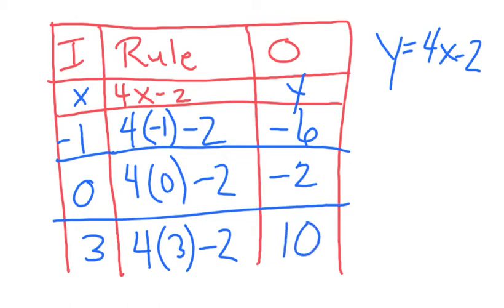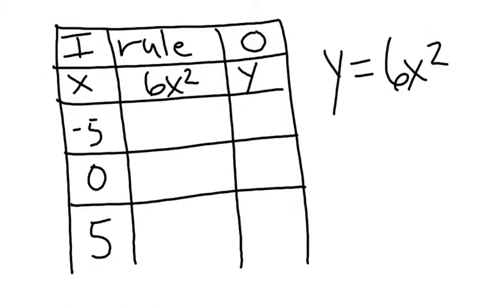Now, that's how you make an input-output table. Let's do another one. Here's another example.